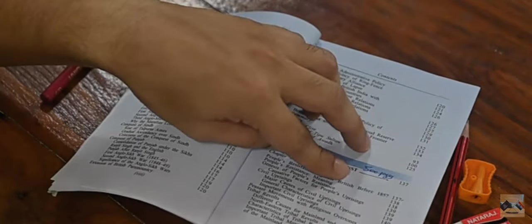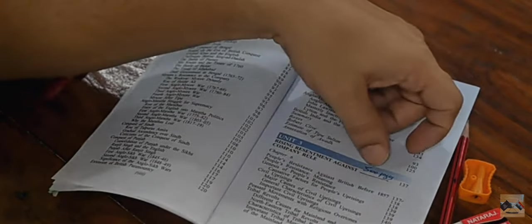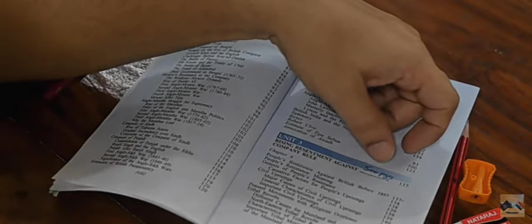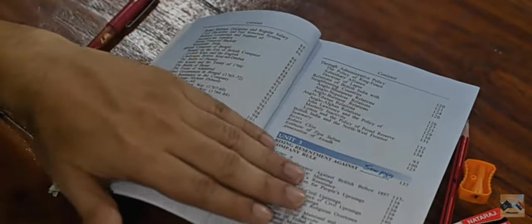Same number of pages are there in Bipin Chandra also, about 500 pages. If you read 40 pages per day, you can finish it in around 15-20 days, right? So let us go ahead and start our preparation from here.